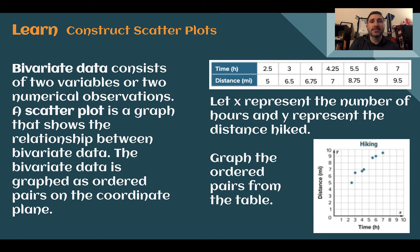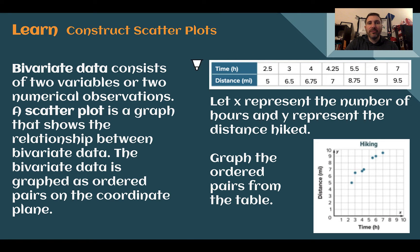Construct scatter plots. Bivariate data consists of two variables, or two numerical observations. A scatter plot is a graph that shows the relationship between the bivariate data — so between these two variables. The bivariate data is graphed as ordered pairs on the coordinate plane. Here we can see in the table we have two variables: time and distance. You've probably heard of these before as independent and dependent variables. That is a bivariate data set.